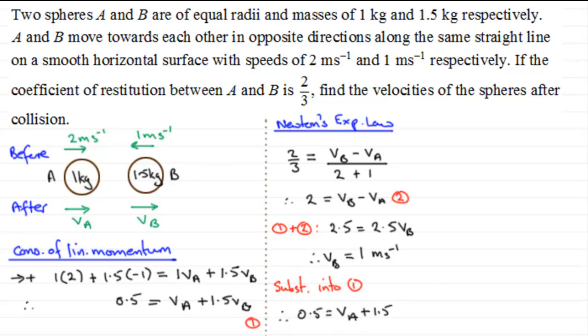And again, if we just section this off here, then what we've got is that if we subtract 1.5 from both sides, therefore V_A equals 0.5 minus 1.5, which is going to be minus 1. Minus 1 metre per second.